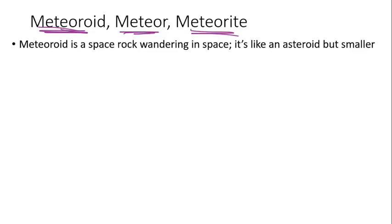Meteoroid is in space — it's basically the space rock, kind of like an asteroid. Meteor is the fast event — it's when it streaks across the sky. We'll talk about that here in a minute. And meteorite is the rock on Earth.